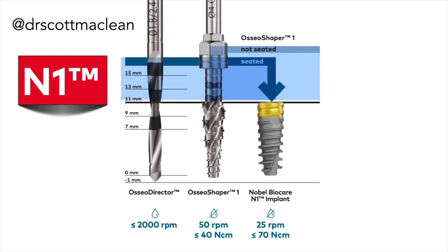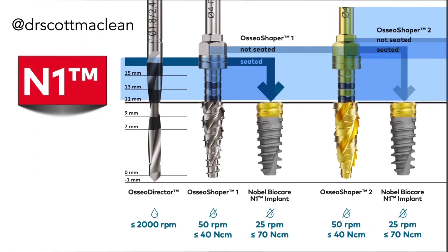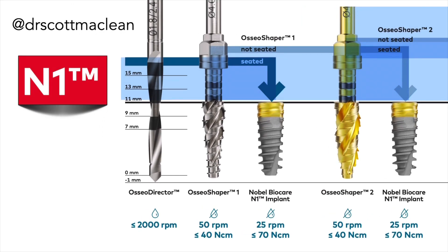The drilling protocol: first, use the osseo director with water at 2000 RPM. Second, use the osseo shaper at 50 RPM without water, then place the implant. If the implant can't be seated, use osseo shaper two at 50 RPM without water, then attempt placement again.